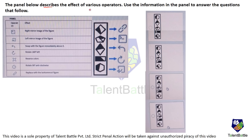The panel describes the effect of various operators; use the information to answer the questions. There are five figures, and for each figure an operator is given. The first operator says replace with the bottom-most figure — so the hexagon comes to the top and the square goes to the bottom. Checking the options, every option has hexagon at the top, so this operator alone doesn't help eliminate options.